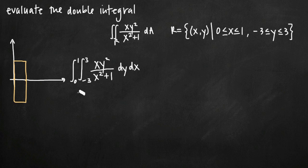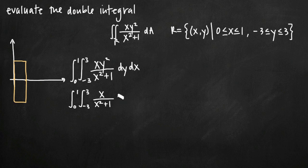Integrating first with respect to y, we can see that y² is the only part of this function that involves y. We can separate y² from the rest, writing x/(x²+1) · y². When we integrate with respect to y, we treat y as the variable and x as the constant, so x/(x²+1) is just a constant coefficient on the y² term.